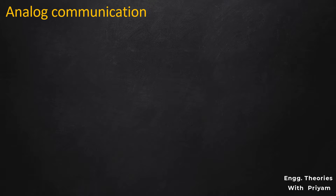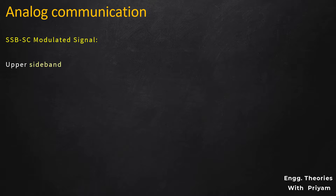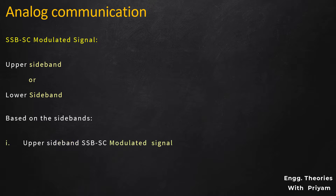From this lecture of Analog Communication, we are going to start the modulation process of the SSBSC modulated signal. Single sideband suppressed carrier signal, or SSBSC signal, consists of either of two sidebands, namely the upper sideband or lower sideband signal. Based on these two sidebands, SSBSC modulated signal can be classified as upper sideband SSBSC modulated signal and lower sideband SSBSC modulated signal.